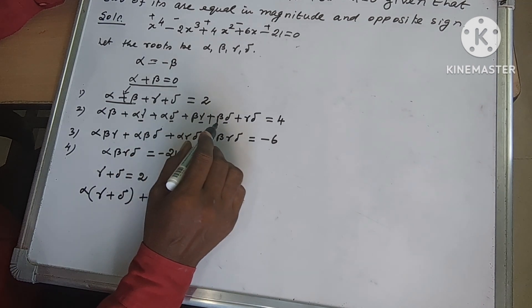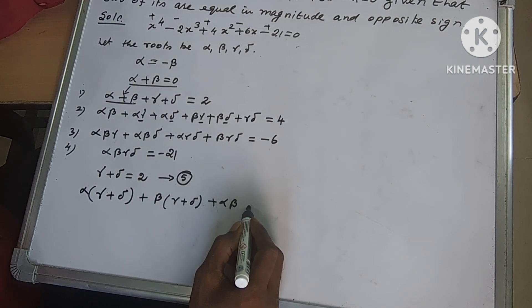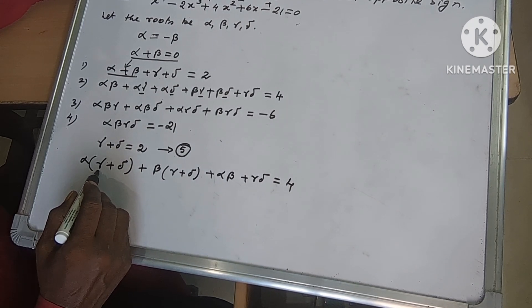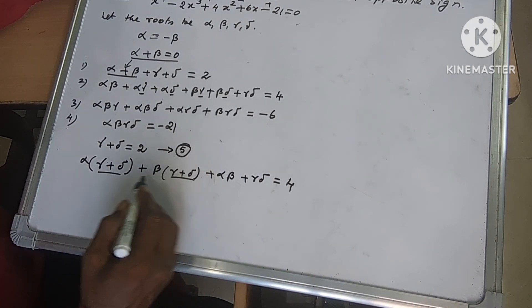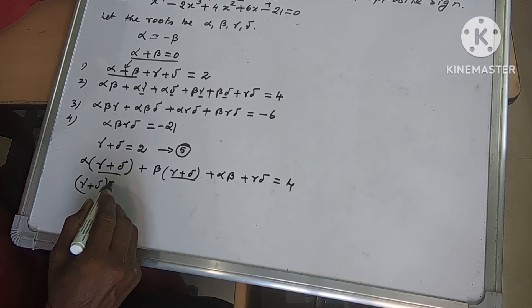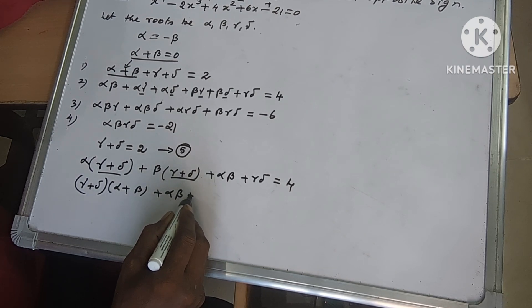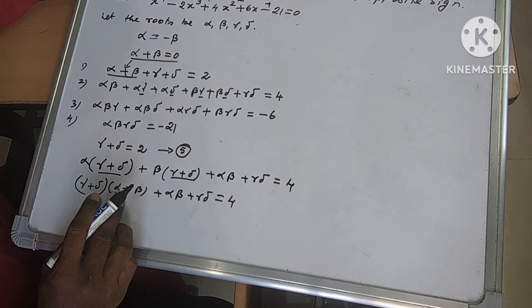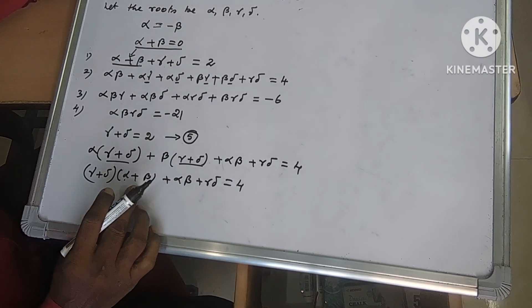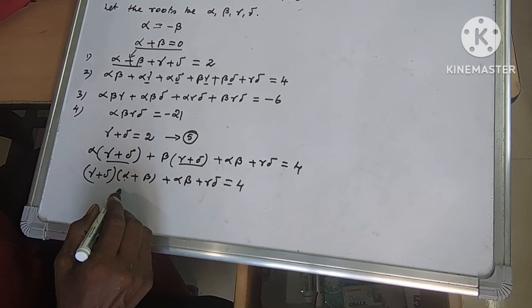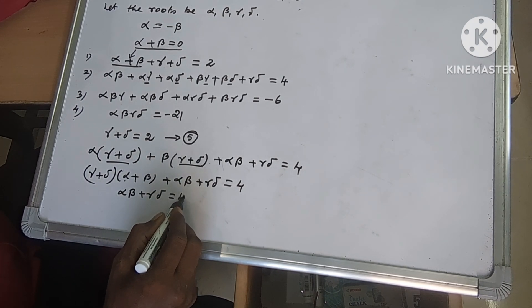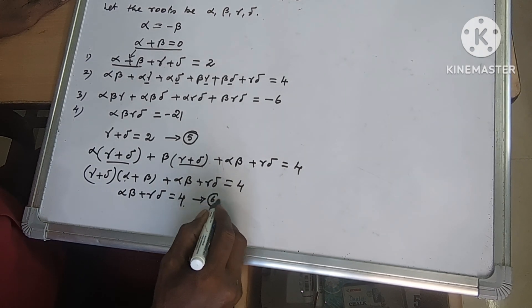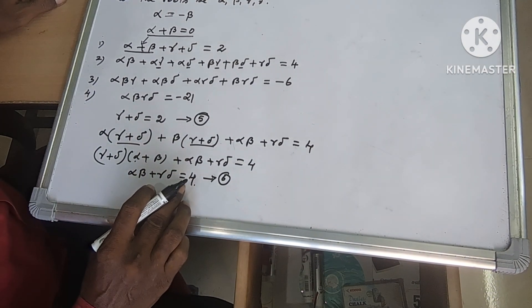So remaining, after simplification taking gamma plus delta common, we get alpha·beta plus gamma·delta equals 4. But alpha plus beta is 0, so that term vanishes. So we have alpha·beta plus gamma·delta equals 4. We take this as relation 6.